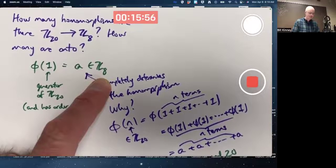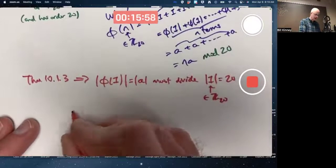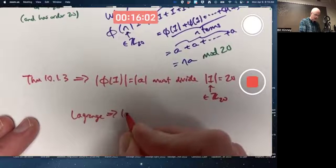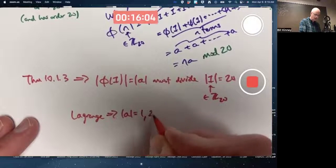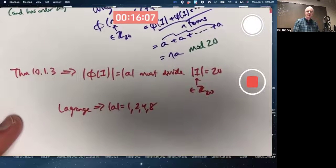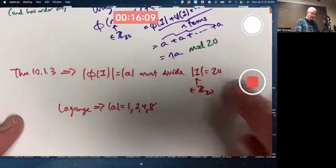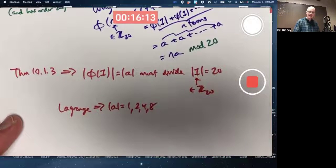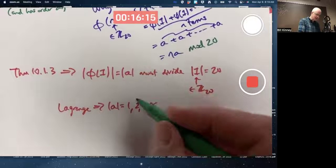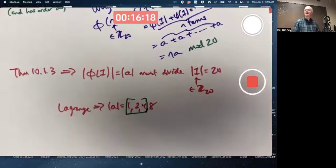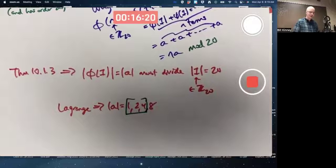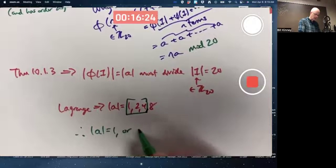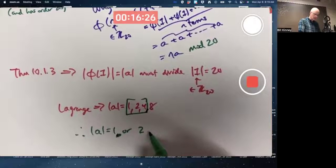One, two, four, or eight. Lagrange implies the order of A is one or two or four or eight. So it's got to divide 20 and it's got to be one of these numbers. It can't be eight. It's got to be one of those three. Therefore, the order of A equals one or two or four.